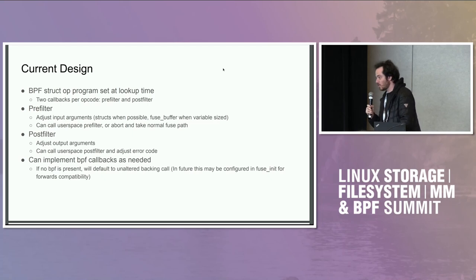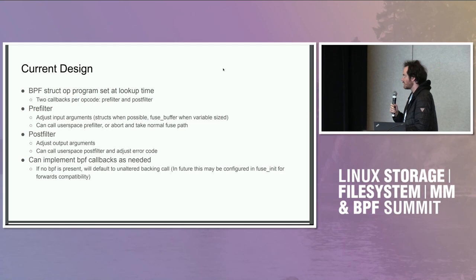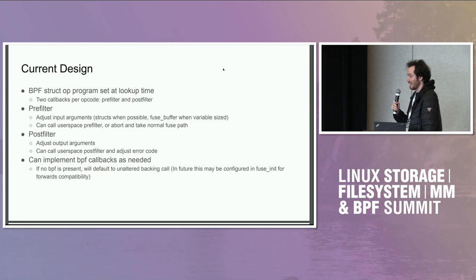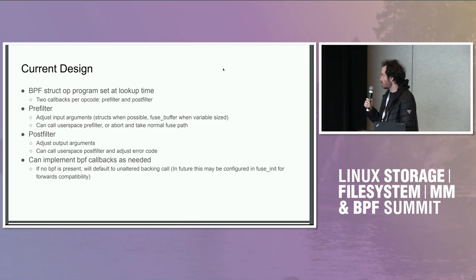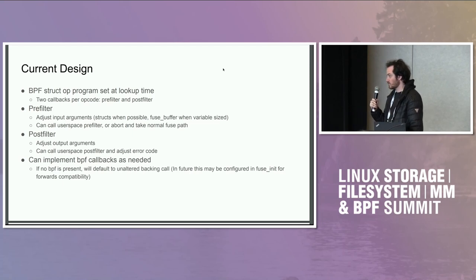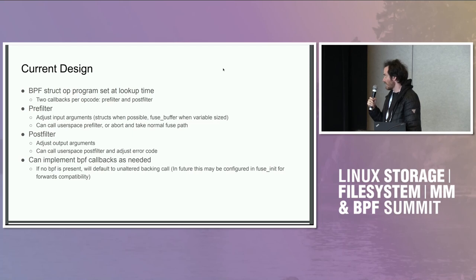We've switched over to using a BPF struct ops call. In our v1 of the patch, we were adding our own program type and had an awful lot of void stars, which was kind of unpleasant to deal with. We now have more or less two op codes per fuse call — our pre-filters and post-filters. For the most part, these give access to generic structs. Some things are handled within a special fuse buffer for fields that have variable length, like strings and data buffers.